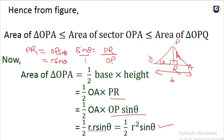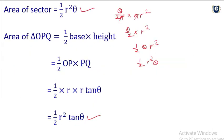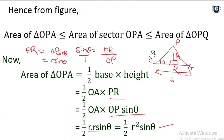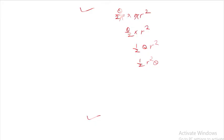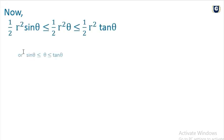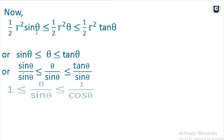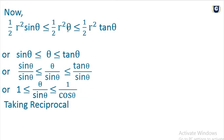Therefore: area of triangle OPA is one half R squared sin theta, area of sector OPA is one half R squared theta, and area of triangle OPQ is one half R squared tan theta.